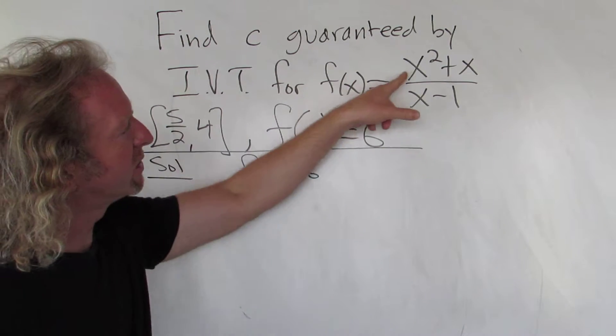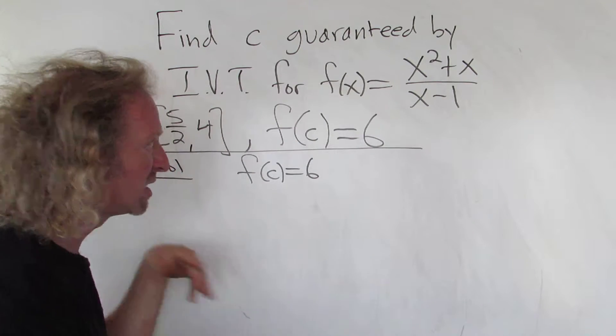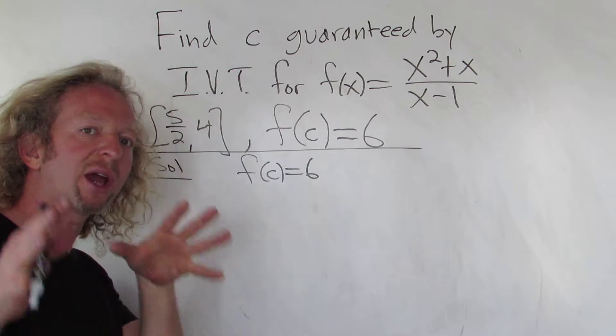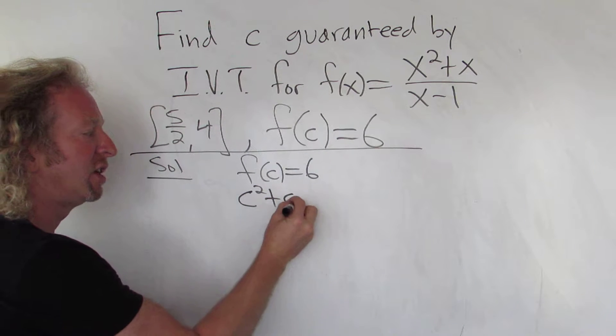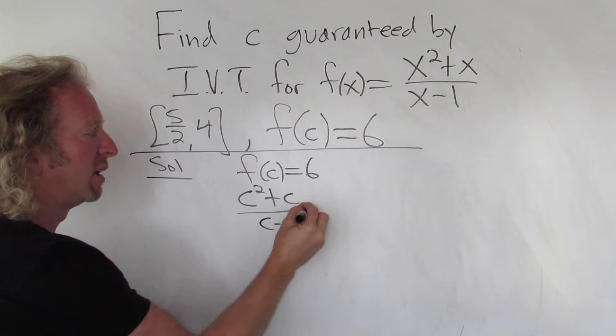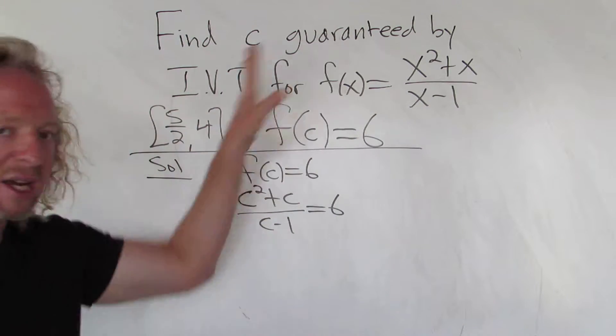So F of X is X squared plus X over X minus 1. So F of C is the same thing. You just replace all of your X's with C's. So it would be C squared plus C over C minus 1 equals 6. All you do, right? Just replace all your X's with C's.